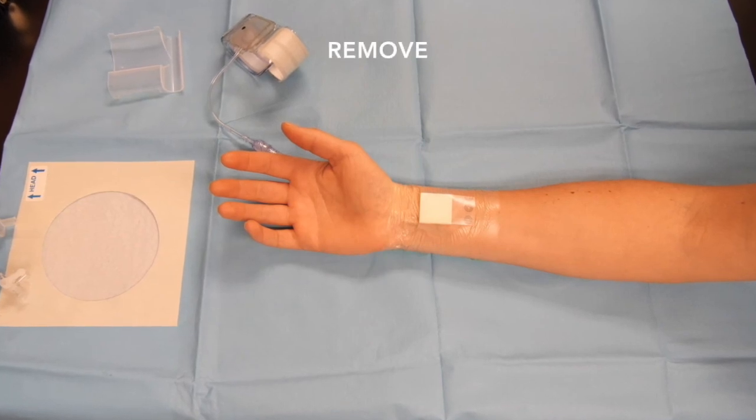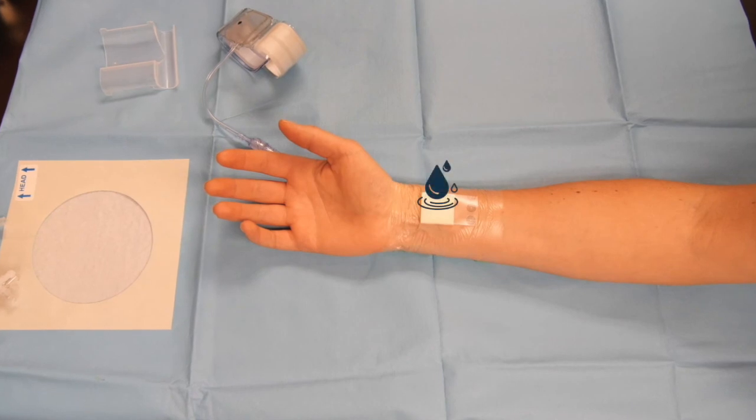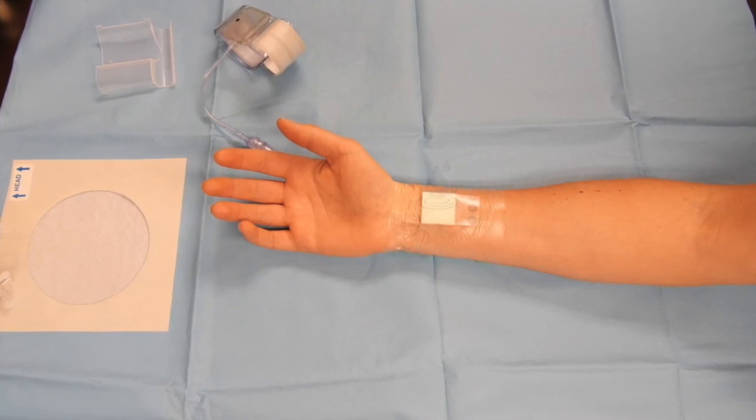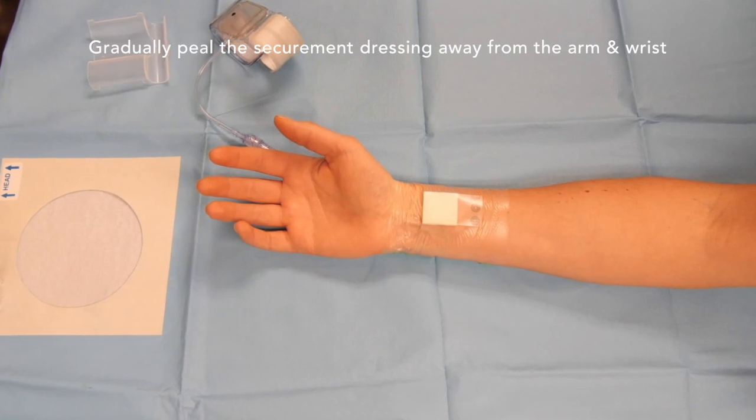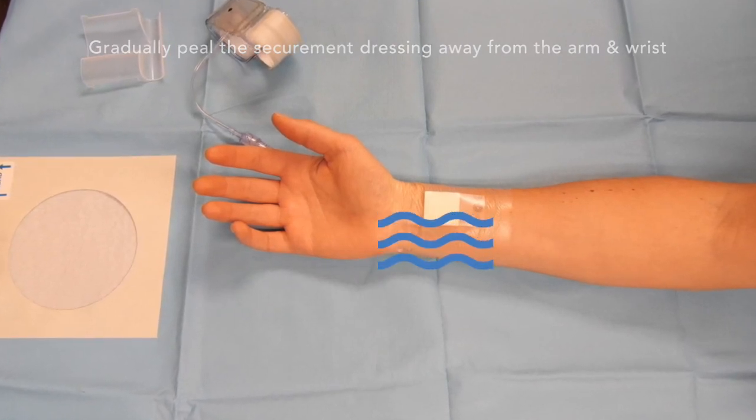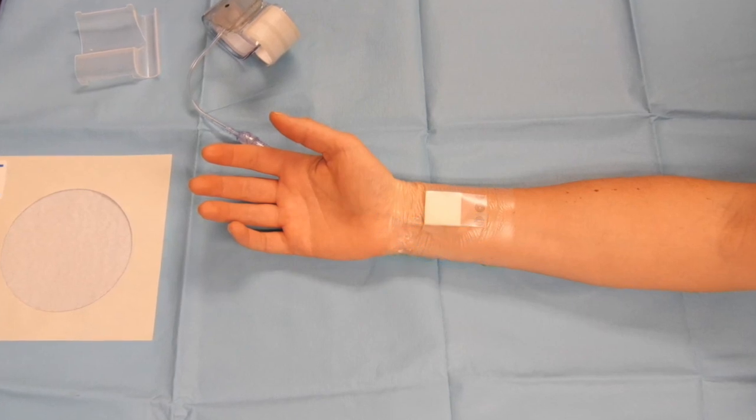To remove the patch and securement dressing at 24 hours, apply running warm water over the dressings. With water running, gradually peel the securement dressing away from the arm and wrist. Under the running water, the patch can then be readily eased away from the underlying wound, leaving the scab in place.